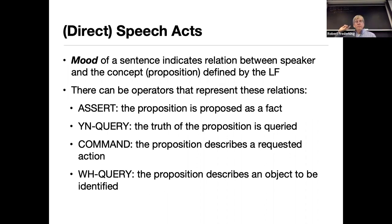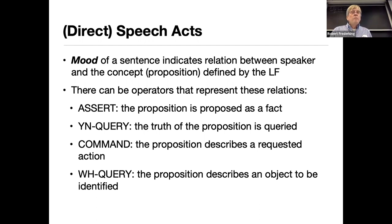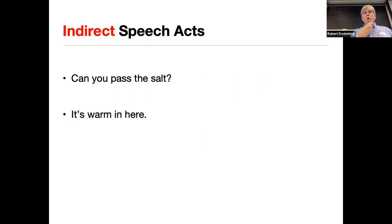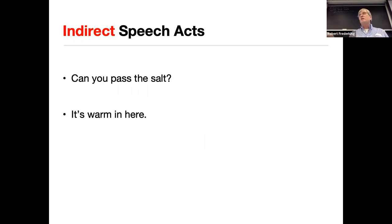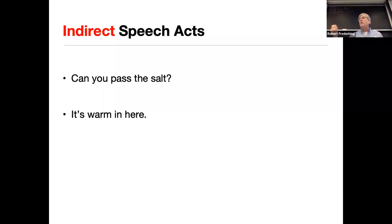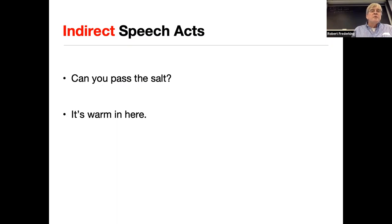A famous sub-area of pragmatics is speech acts. On the surface of sentences, they're marked for whether you're asserting something, asking about the truth of it, or asking somebody to do something. But people notice there are what they call indirect speech acts — all the time, people will say something with a different surface form than what they really want. If I say 'can you pass the salt,' the joke answer is just 'yes' and then sit there, because you answered the question. But it's obvious I want you to give me the salt — it's a polite way of making a request. Similarly, if you're sitting next to a window and I say 'it's warm in here,' I might be implying I'd like you to open the window.